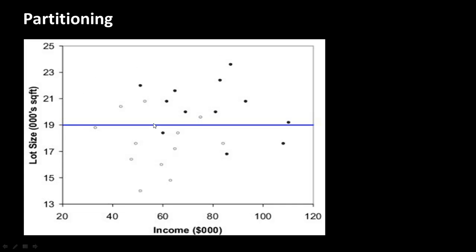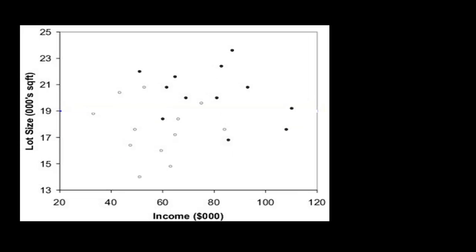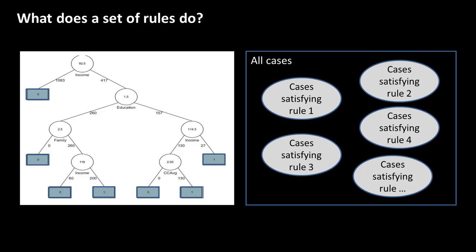The first group on top indicates all the cases for lot size greater than 19, and the lower part consists of all the cases for which the lot size is less than 19. Now, jumping back — here we are saying all the cases satisfying rule 1, rule 2, rule 3, and so on. What we would really like is for all the cases that satisfy a particular rule to be as homogeneous as possible.